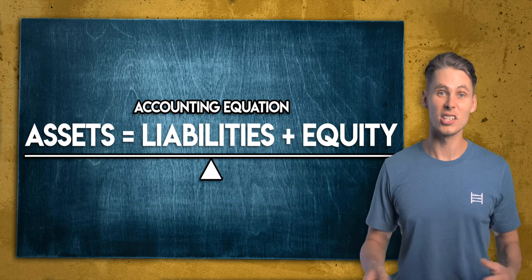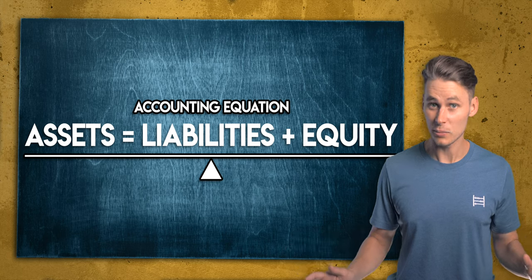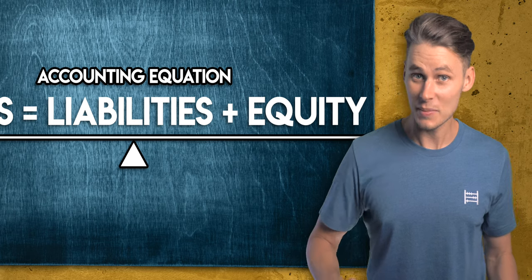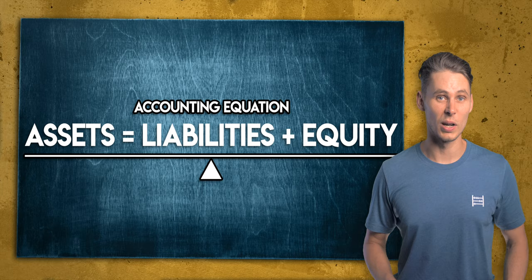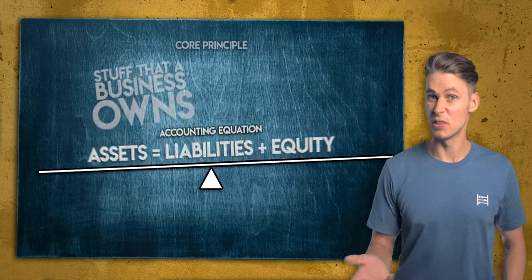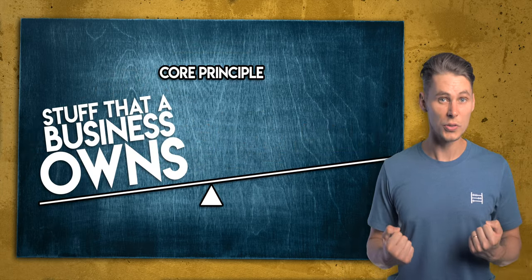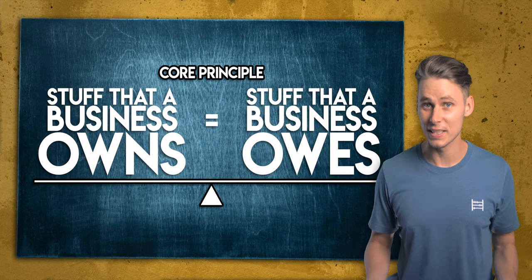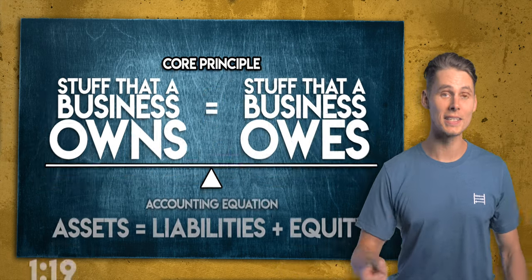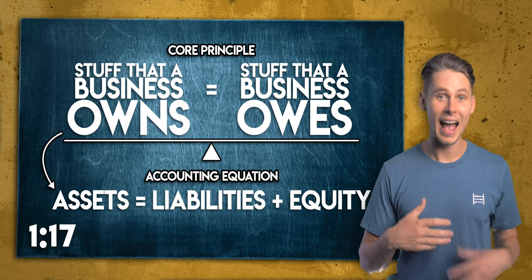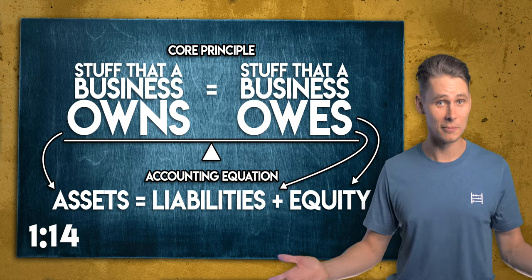The implication of this is that there are two sides to everything in accounting. Let me explain. The concept at the heart of the accounting equation is very simple: the stuff that a business owns is equal to the stuff that a business owes. A business owns assets and it owes liabilities and equity.